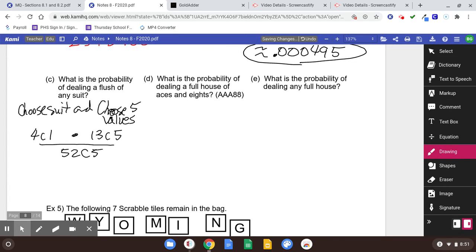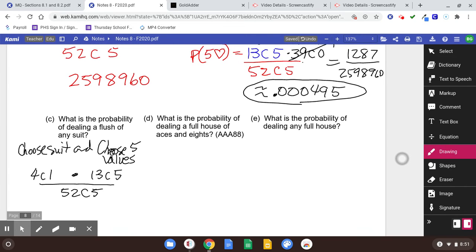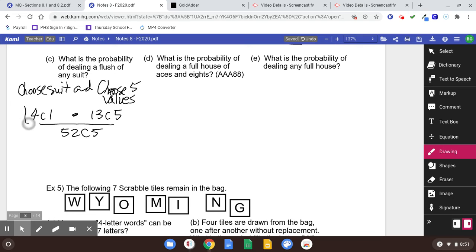That seems kind of silly to do it that way because we know already we're just going to multiply the number that we got in the last problem by 4. So we're taking the last problem times 4. It's going to be 4 times 1287 over 2,598,960. And we're going to get about 0.00198.